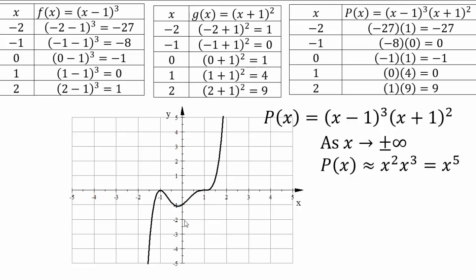The multiplicity controls whether the graph touches or crosses through an x-intercept. With an even exponent on the factor, the graph touches the intercept without crossing through.